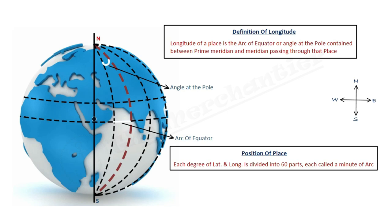In latitude we have angle at center of Earth, but in longitude we have angle at pole, and this point is the position of place.